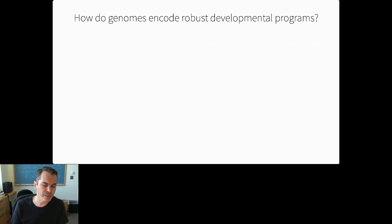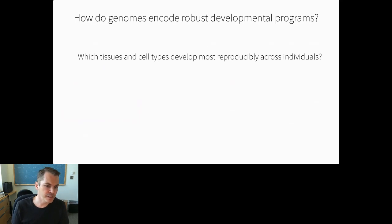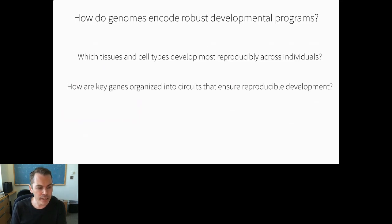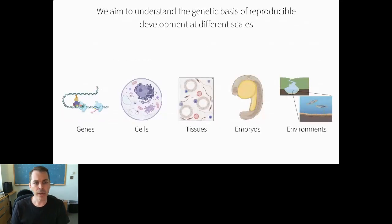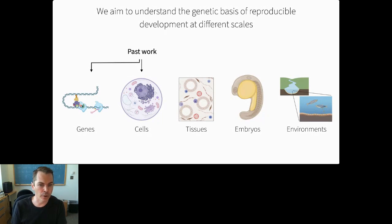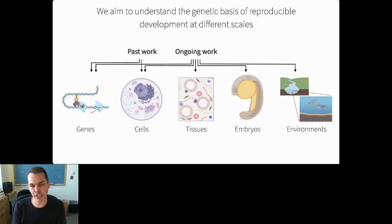We're broadly interested in three questions, all of which I'll discuss today. First, which tissues and cell types develop most reproducibly across individual embryos? Second, how are key genes organized into circuits that ensure the reproducibility of that development? And finally, how does the genome buffer environmental variability during development? I'll first tell you about past efforts to study development and tools we've used, mostly at the scale of genes in individual cells, and then spend most of the talk on variability across whole embryos, including how they deal with a stressful environment.